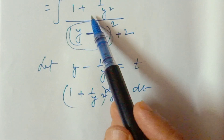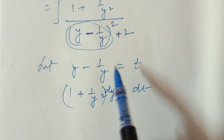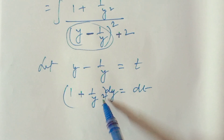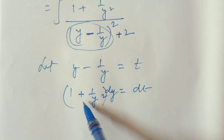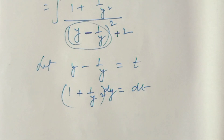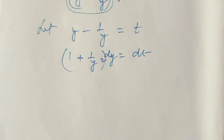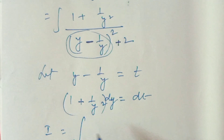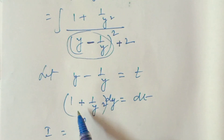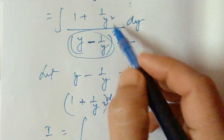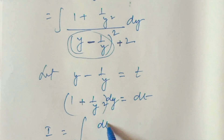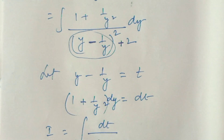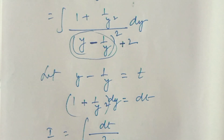After substitution, the integral reduces to the integral of dt over t squared plus 2. Here t squared plus 2 can be written as t squared plus root 2 squared. This matches the standard formula: integral of 1 over t squared plus a squared equals 1 over a times tan inverse t over a plus c.